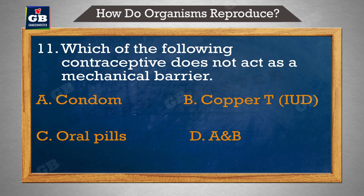Which of the following is a contraceptive method? A. Condom, B. Copper-T / IUD, C. Oral Pills, D. A and B.